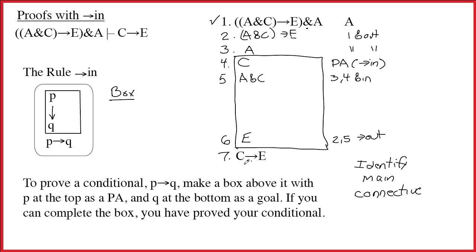So, line 7 is the conclusion itself, and its justification is actually the entire box. It's 4 through 6. And so that's what I'll write over here, 4-6, and the name of the rule, arrow in.